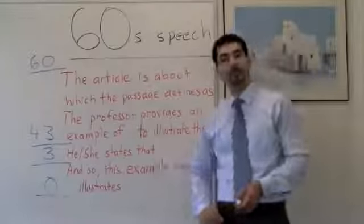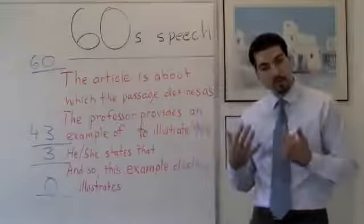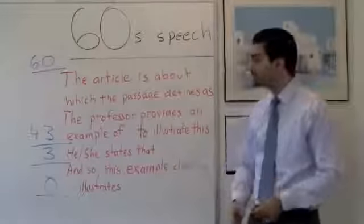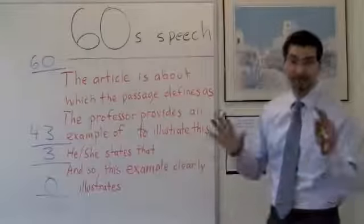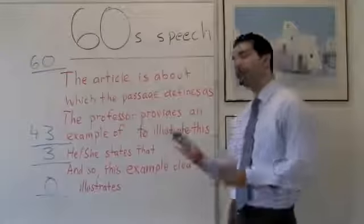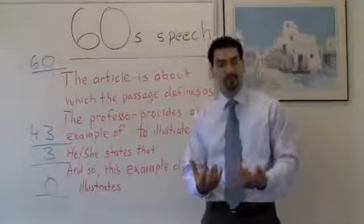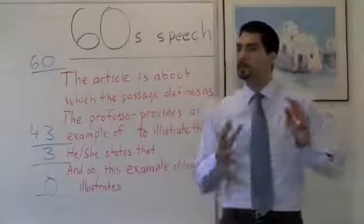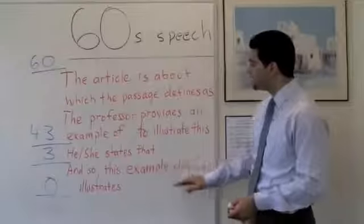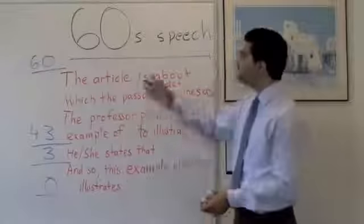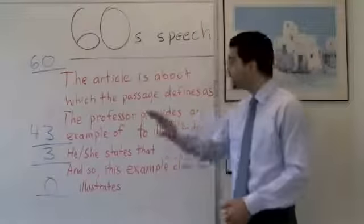Now after that is the most important part of your speech. That's where you repeat all of the details you can, the important information about the lecture. And really simple, you either say he or she states that. And then you explain everything that you can, the best you can. Now here's a powerful last sentence to show a conclusion, a conclusive idea that restates the structure and provides the person grading you with a powerful sentence to grade you by. And so, this example clearly illustrates whatever the topic is. So in our case, it would be camouflage, right?